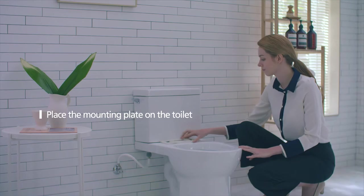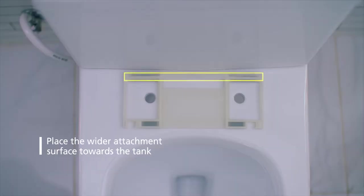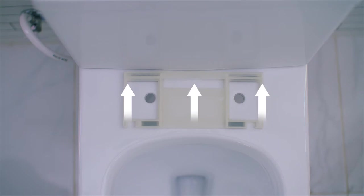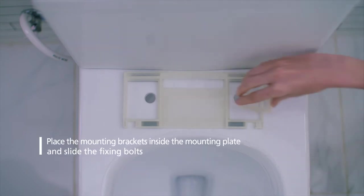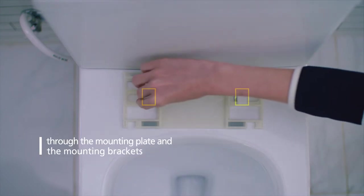Place the mounting plate on the toilet. Place the wider attachment surface towards the tank. Please pay attention to the direction. Place the mounting brackets inside the mounting plate and slide the mounting bolts through the mounting plate and the mounting brackets.